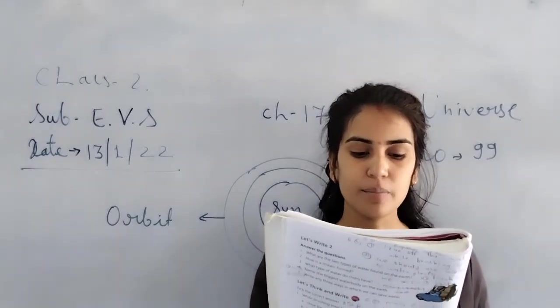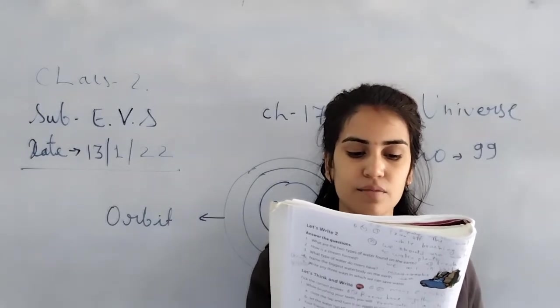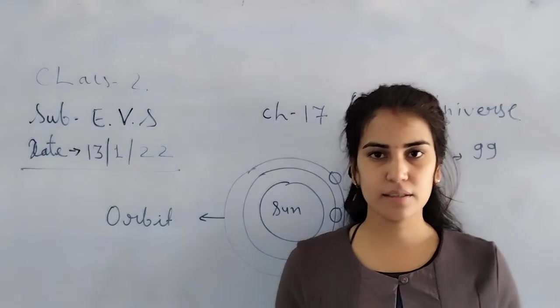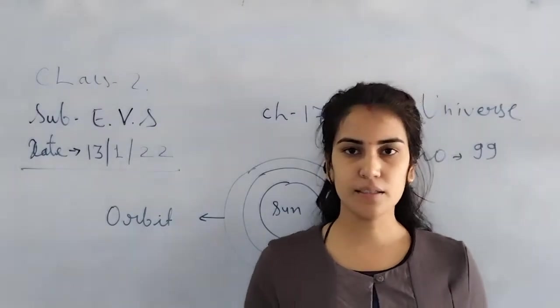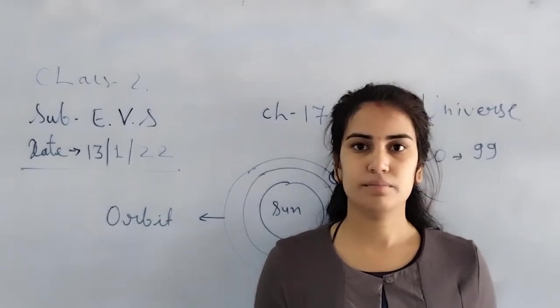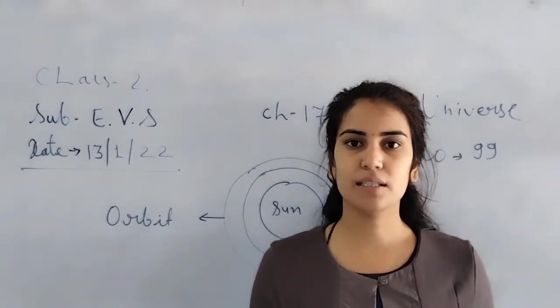Earth is the only planet that has life. It has water and air to support life. Now you can understand that Earth has life because it has water and air present. This is the different quality of Earth planet.